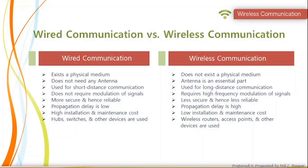Here are some basic differences between wired and wireless communication. Wired communication requires a physical medium. It is used for short distance communication and does not require modulation of signals. On the other hand, wireless communication does not require any physical medium but uses antennas. It is for long distance communication and requires high frequency modulation of signals. Wired communication is more secure and reliable. Propagation delay is high in wireless but low in wired communication. The cost is low in wireless communication systems compared with wired. In wired communication, hubs, switches, etc. are used, while wireless routers, access points, and other devices are used for wireless communication.